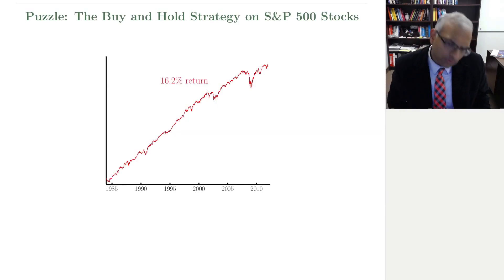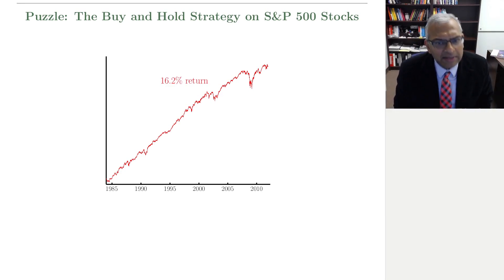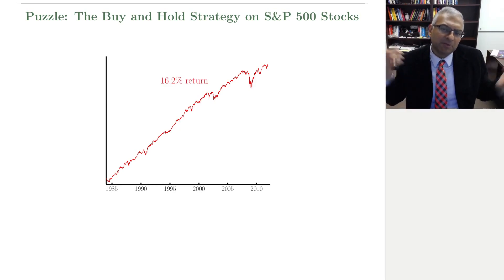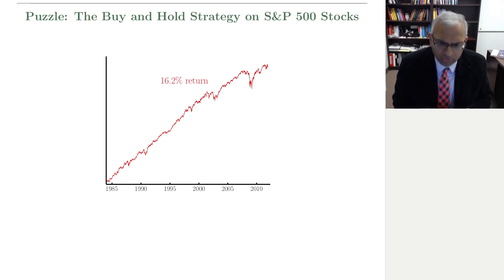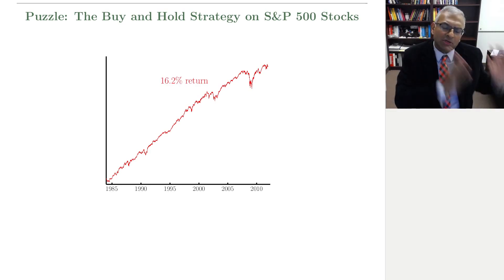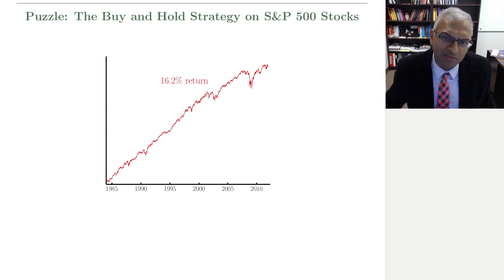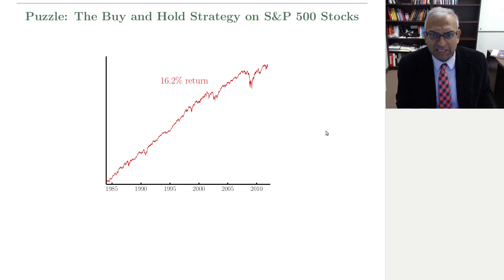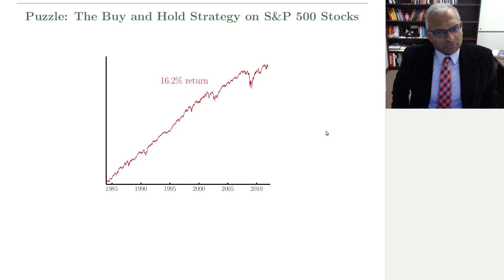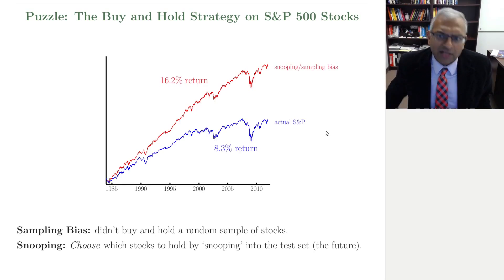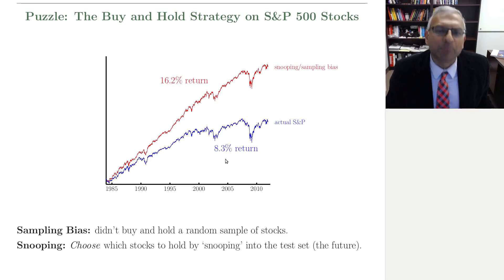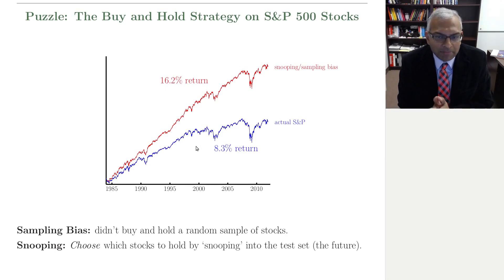Let me show you an example — it's a puzzle. If you go back to 1985, when we had all this nice financial data and the S&P 500, today we can look at those 500 stocks — Apple, Google, IBM, and so on — and see how they performed going back to 1985. Wow, you get 16.2% annualized return. Well, I have news for you: the 16.2% return is not realizable. The actual return of the S&P 500 from 1985 to now is approximately 8.3%. That factor-of-two difference shows you the impacts that sampling bias and data snooping can have.